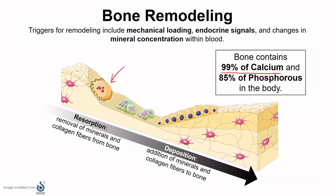Deposition is a process by which osteoblasts lay down new bone. Both of these processes can happen in response to many different triggers, including mechanical loading — putting stresses on those bones — endocrine signals, or changes in the mineral concentration in the blood.